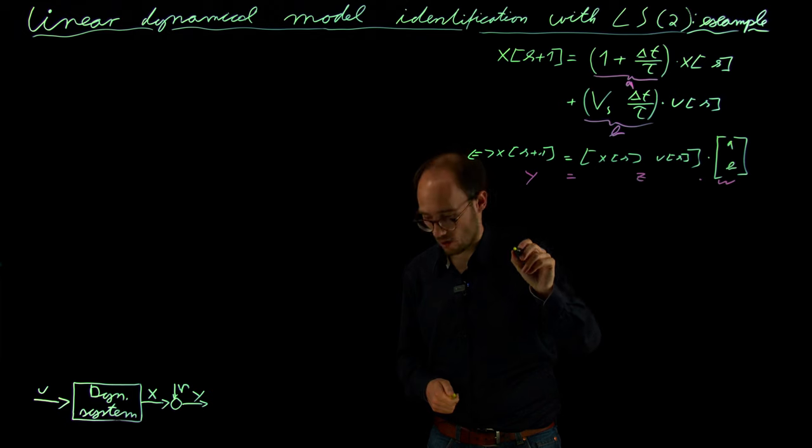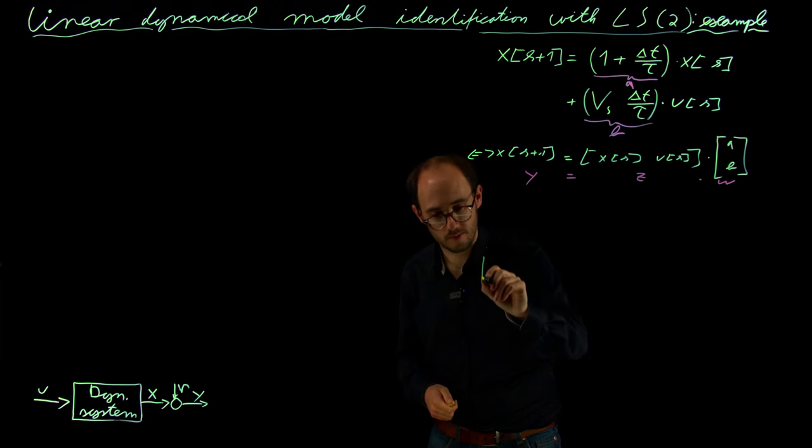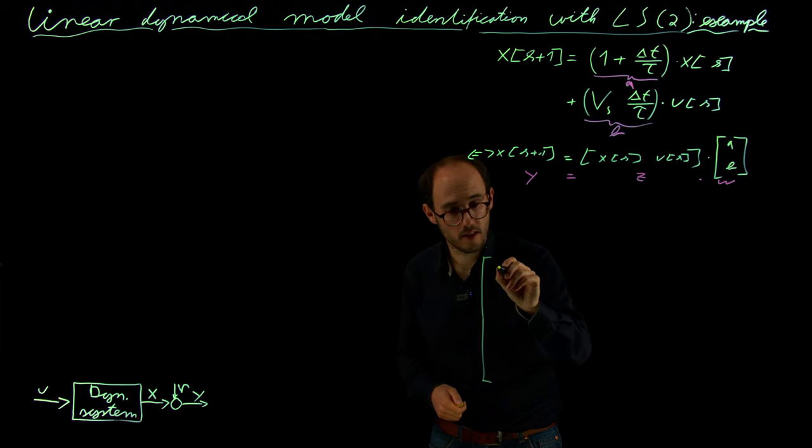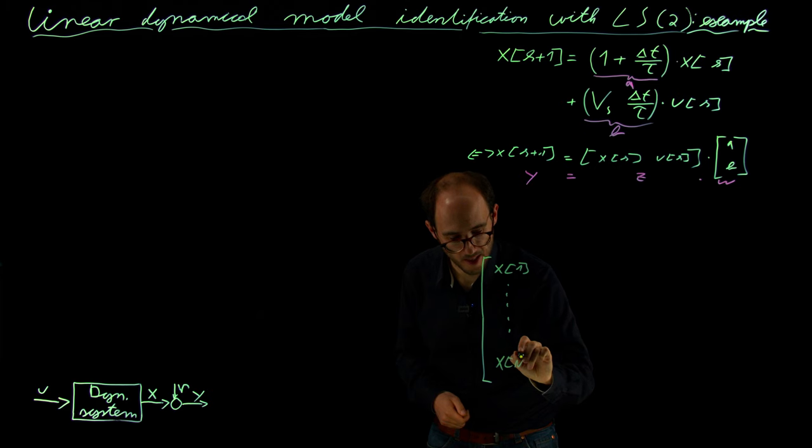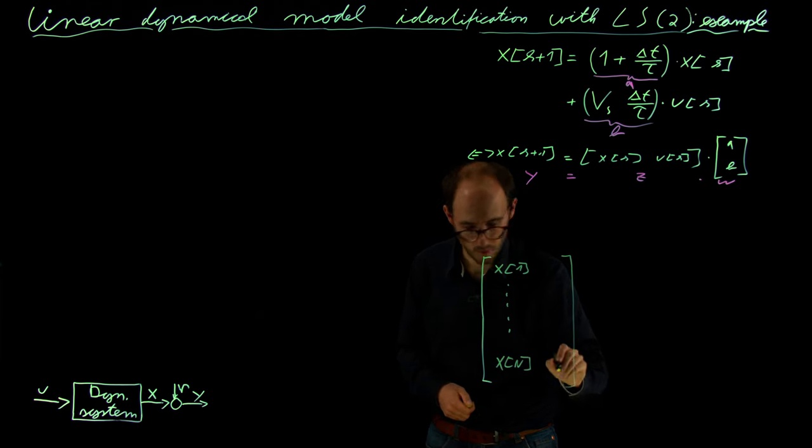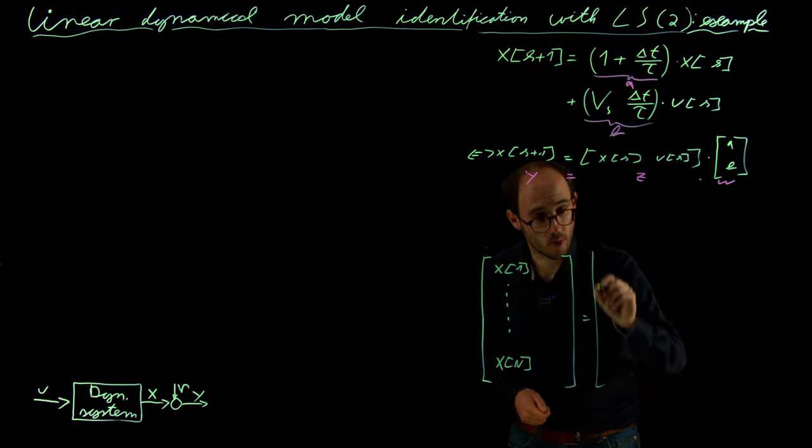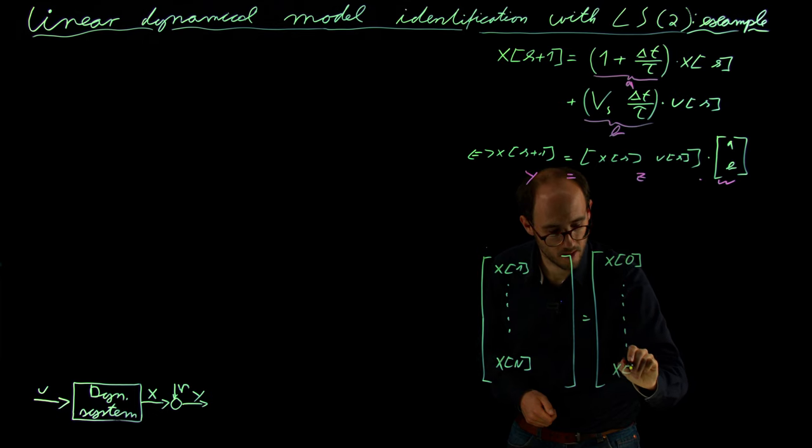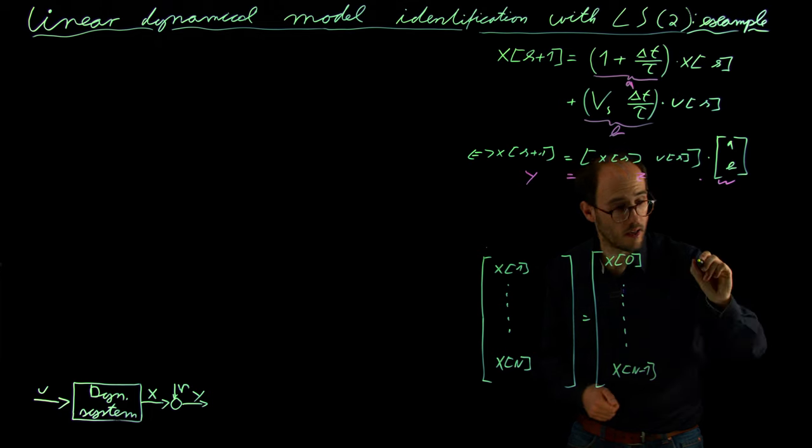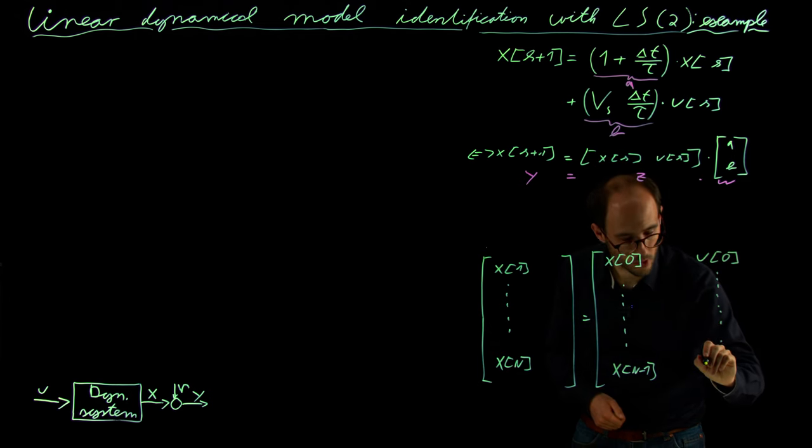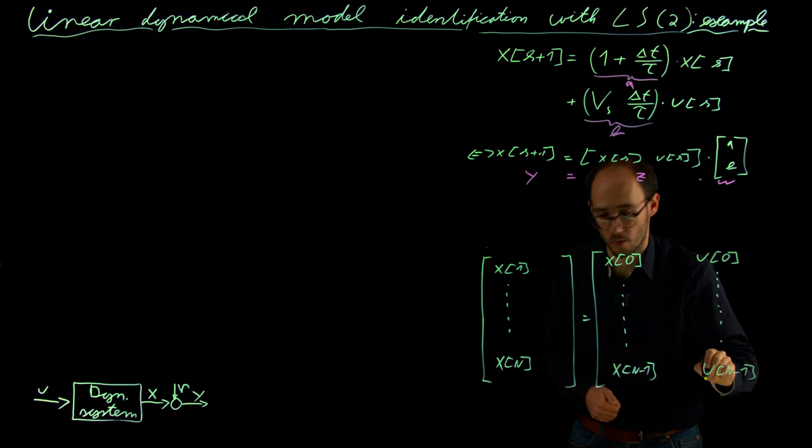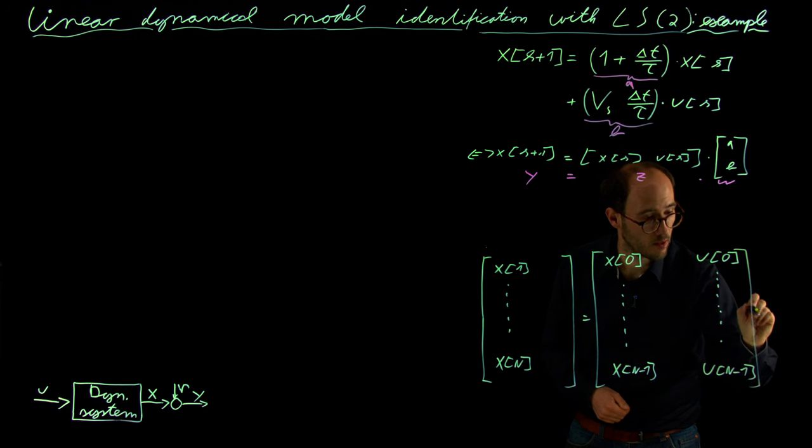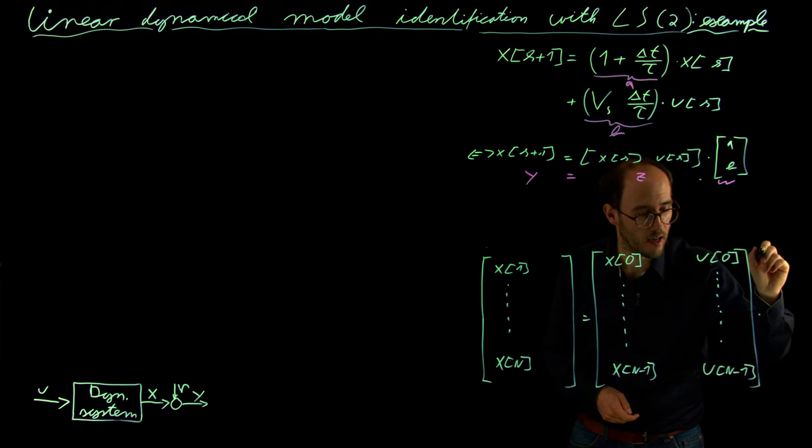And with that, we can basically obtain measurement samples. I need some extra space here for an addition later, so that would be x1, x2, to x of n. And on the right-hand side, we have x0 to x n minus 1, and here we have u0 to u n minus 1, which we observe, multiplied with our unknown parameter vector.